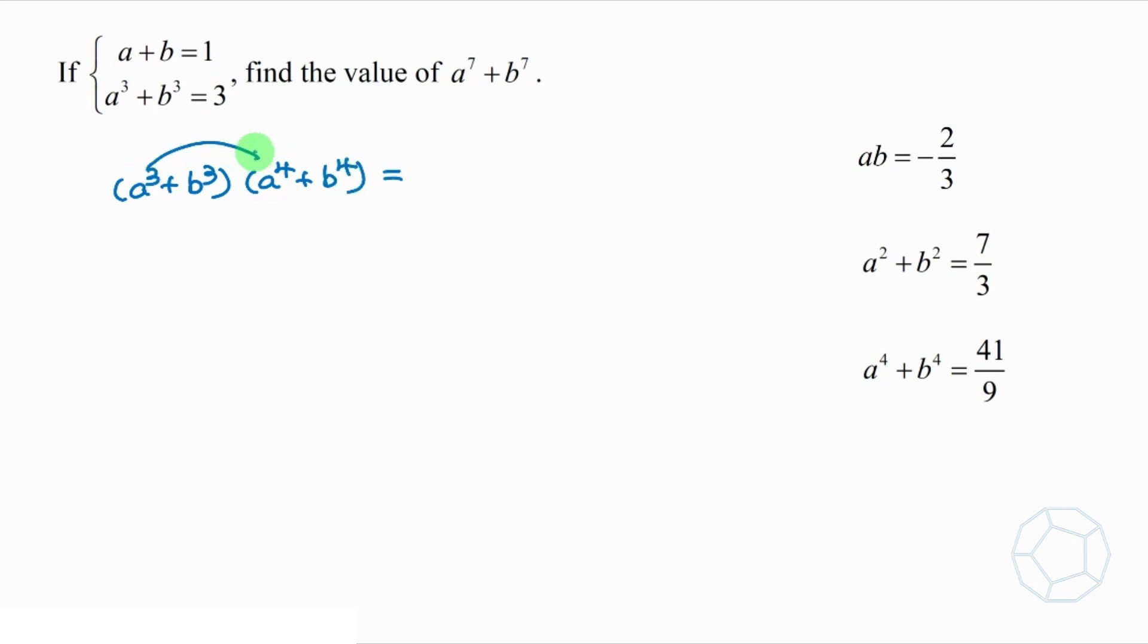we get a to the power 7 plus a to the power 4 b cube plus a cube b to the power 4 plus b to the power 7. On the left, we have a cube plus b cube equals to 3. And we find that a to the power 4 plus b to the power 4 is equal to 41 over 9.